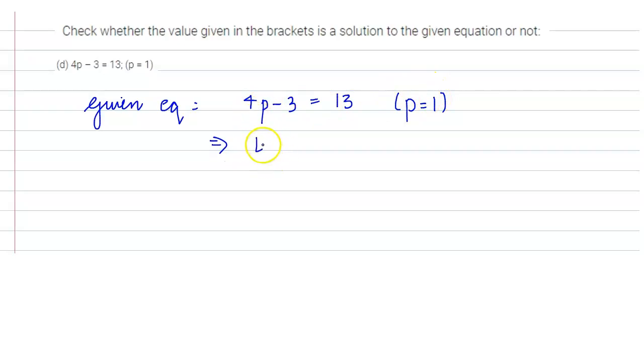We are taking the left-hand side of the equation, which is 4p minus 3. From here we get 4, and in the place of p we are substituting 1, minus 3. Then we have 4 minus 3, which equals 1.